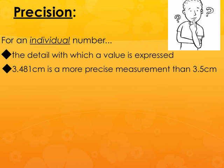Let's talk about precision first — in terms of an individual value, an individual measurement, and then in a group of measurements or a data set. If you're talking about an individual number, something you read off a triple beam balance or off a graduated cylinder, the precision is indicated by the detail with which the value is expressed.